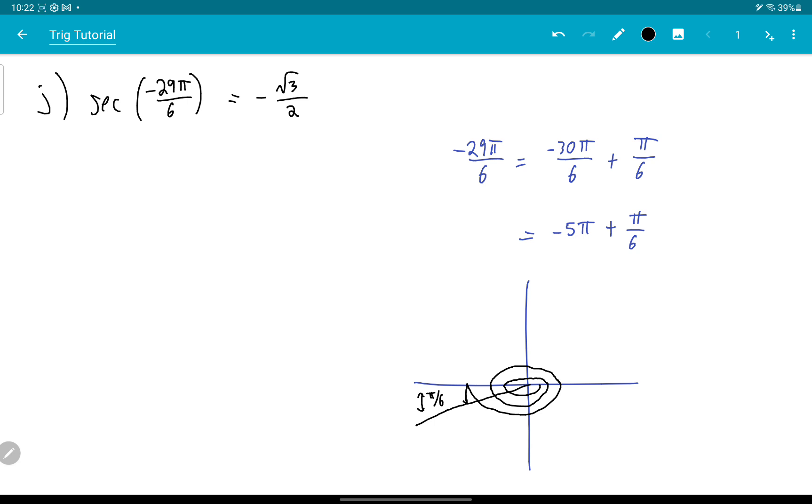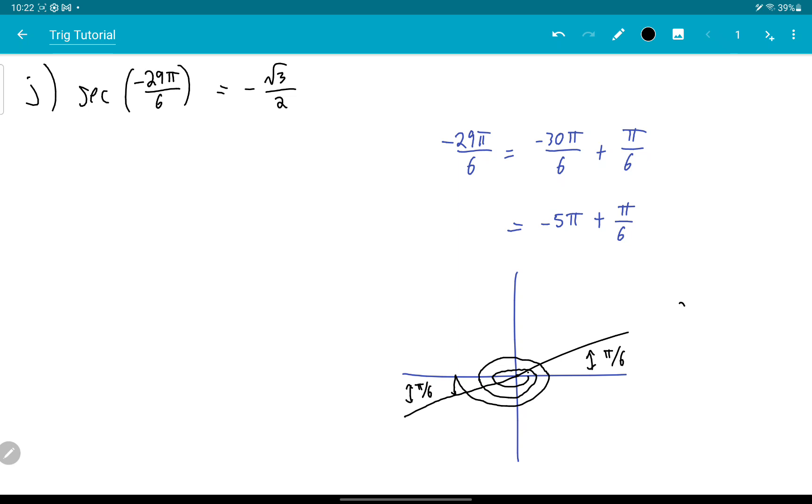And then I reflect it back into the first quadrant, so that's π over 6. So I'm interested in cosine. Well, I guess I'm interested in cosine π over 6 because I'm skipping steps here. Why do I care about cosine π over 6? Well, I'm going to use secant theta is 1 over cosine theta.